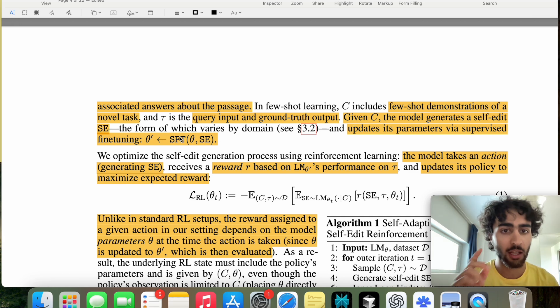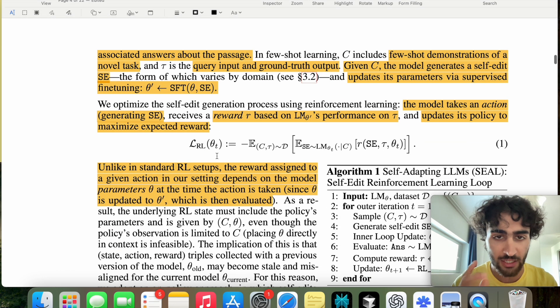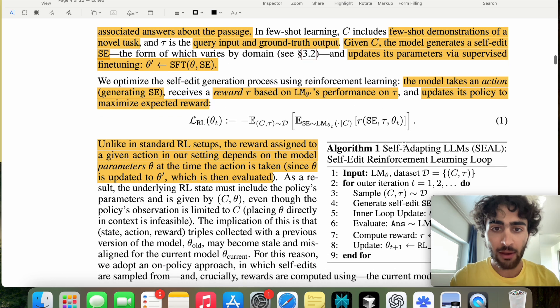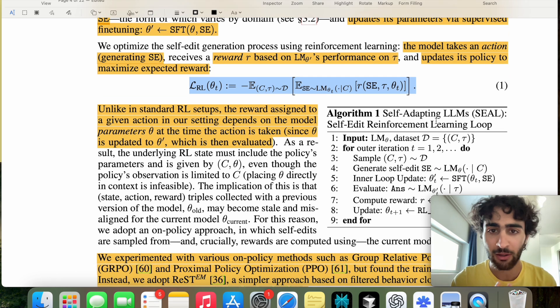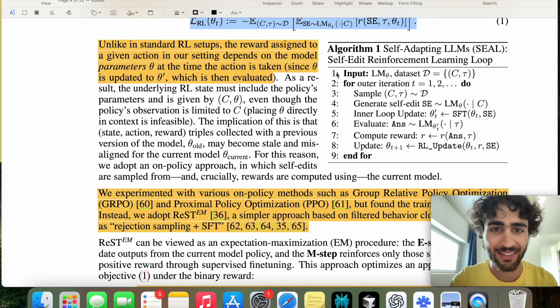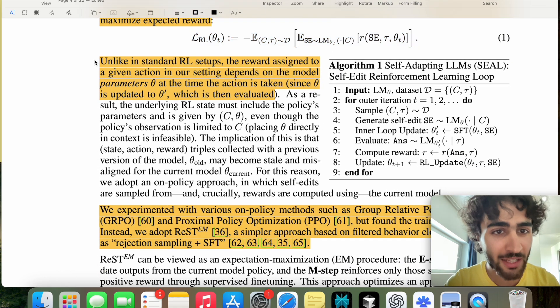So given the context, the model generates a self-edit SE, which varies by domain. We'll discuss this. And then update its parameters via supervised fine-tuning SFT using a LoRa adapter head. Okay. And then we optimize the SE by updating a policy to maximize expected reward. So essentially we're maximizing a reward such that the policy gives us the best self-edit. If you understand expectation and conditional probability, then go ahead and read that. But no, thank you for me.